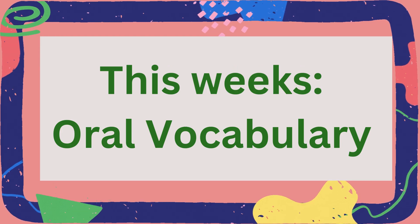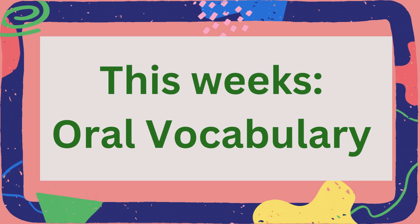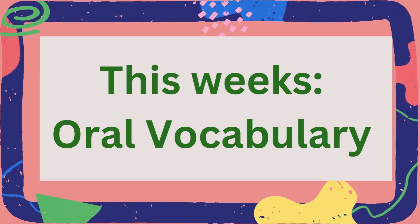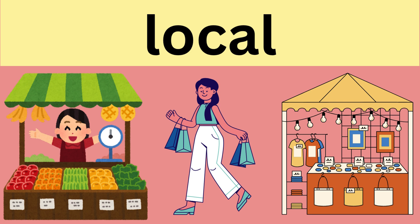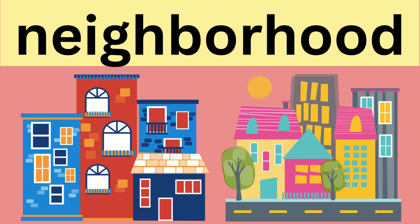Lastly, we will look at the oral vocabulary words that you will hear in this week's reading story. The first word is local. Local means having to do with a particular place such as a neighborhood or town. The second word is neighborhood. Neighborhood means an area in a city, town, or other place that is different from other areas in the same way.